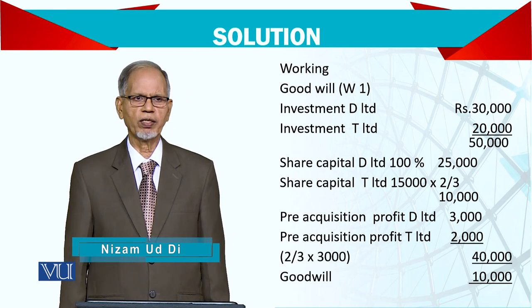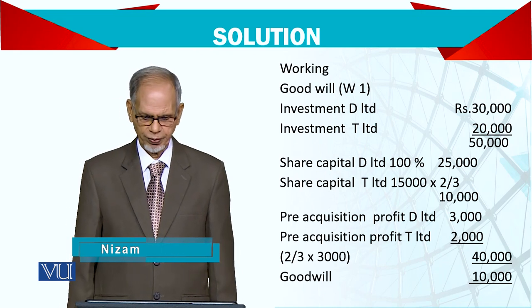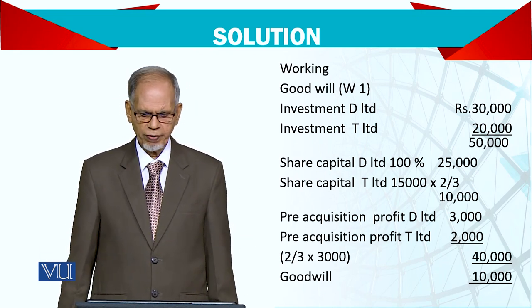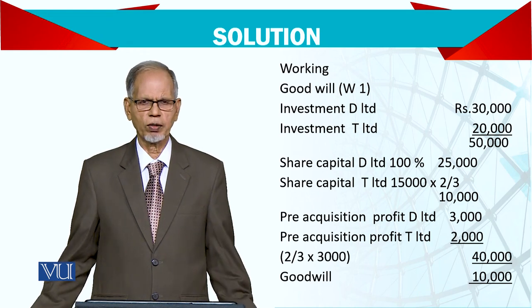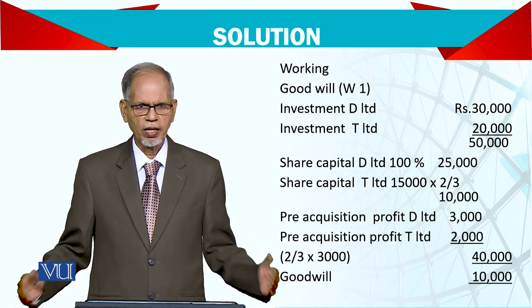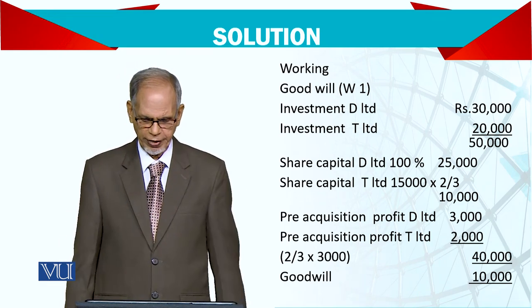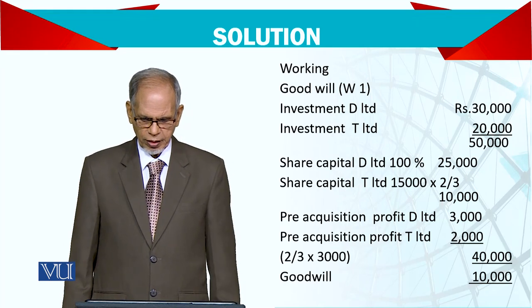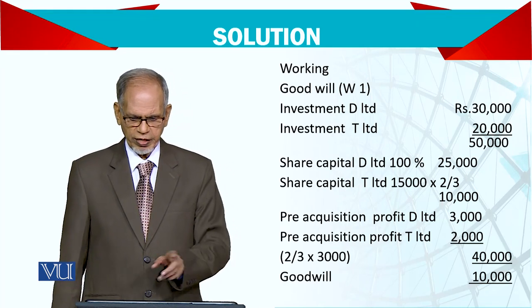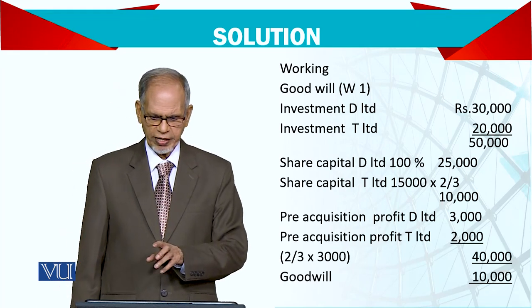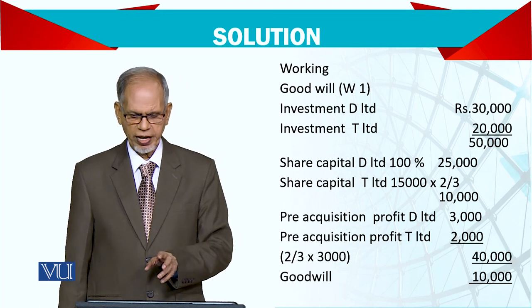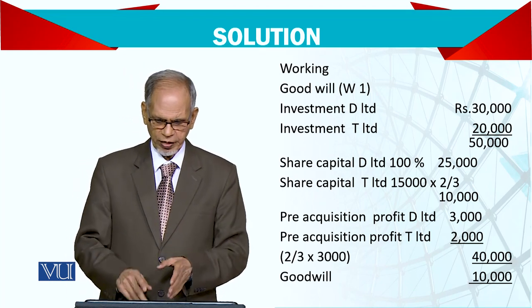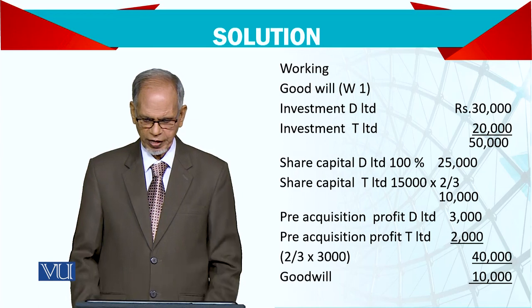Working Number 1: Goodwill — investment in D, investment in T, total. Because there is no vertical structure here. You have taken 100% share in D and two-thirds share in D, so accordingly you have taken the share capital.